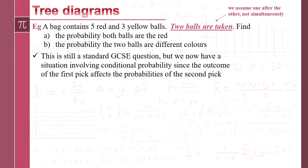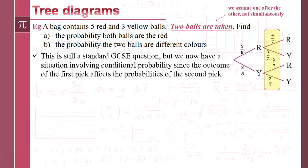One ball comes out, we have a look at it, and then another ball comes out. The color of the first ball is going to affect how many of each color are left in the bag, so it's going to affect the probabilities. These are dependent events — this is where conditional probability comes in. For example, we originally had eight balls in the bag; one ball comes out leaving seven. If that ball was red, there are now four red balls out of the seven left.